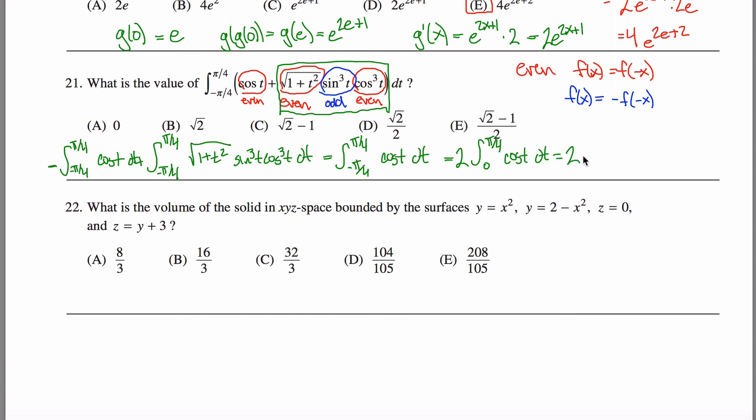And so that's 2 times the antiderivative of cosine of t is sine of t, and I want to evaluate that from 0 to π over 4. The sine of π over 4 is root 2 over 2.